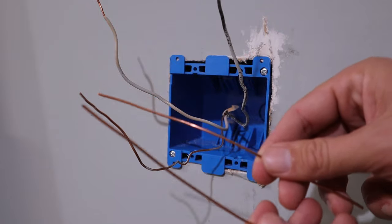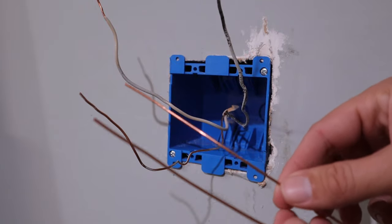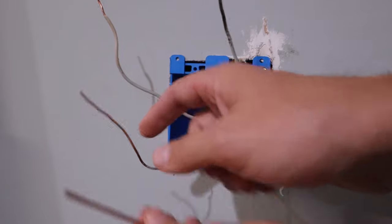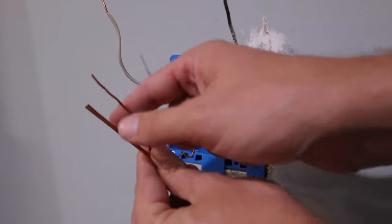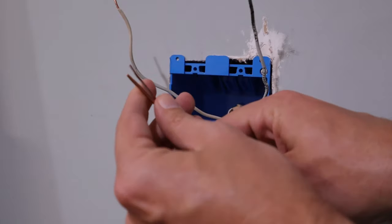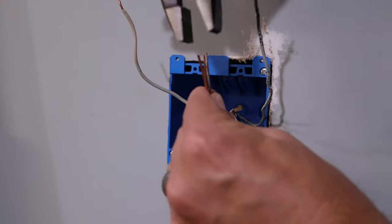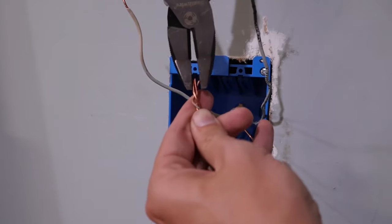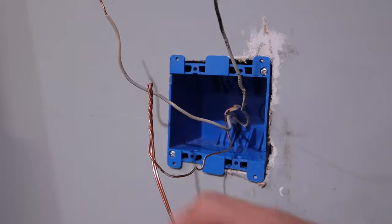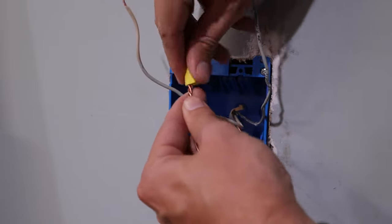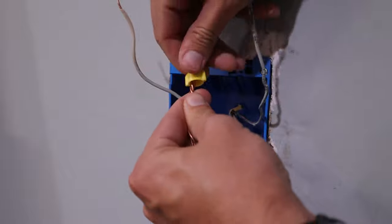Once you've got your pigtails made up, we're going to start with the ground wires. We're going to take those two pigtails and the ground wire coming out of the wall. We're going to put them next to each other like so. Then you're going to want to get them started twisting. Once you've got them started twisting, you're just going to take a wire nut and put it on top and twist it down.